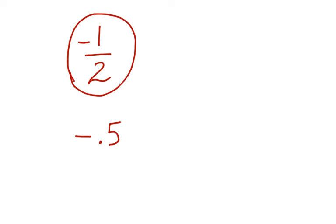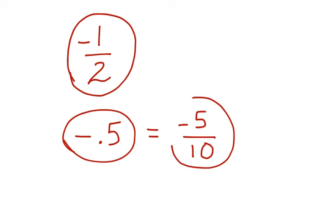What about if I have this, negative 1 half? Well, negative numbers are integers and B is not zero, so this is a rational number. If I have negative 0.5, I can say that this is the same as negative 5 tenths. These are also rational numbers.